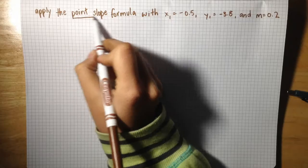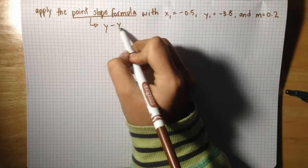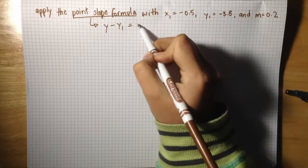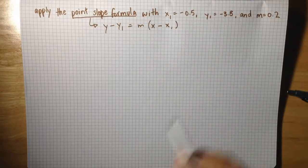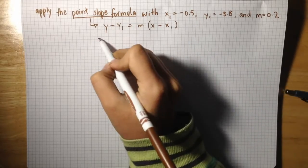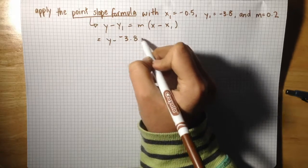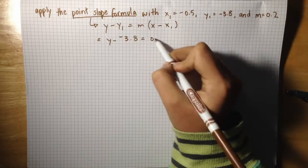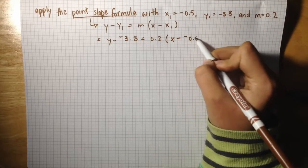The point-slope formula is y minus y1 equals m times x minus x1. Plugging these quantities into this, we get y minus negative 3.8 equals 0.2 times x minus negative 0.5.